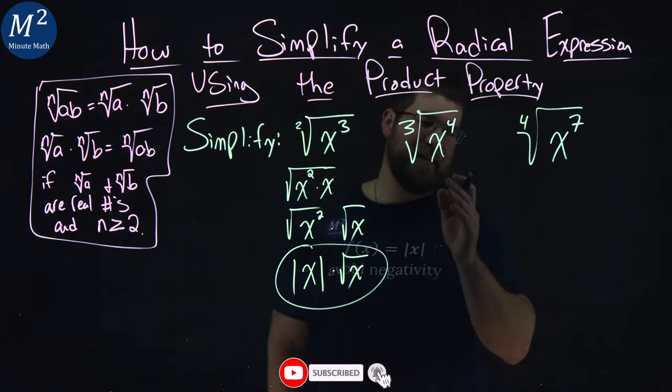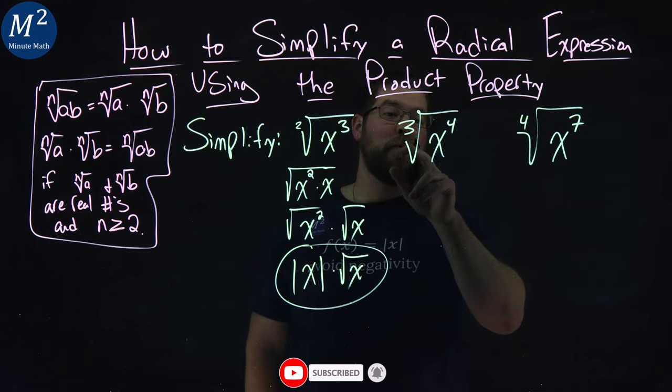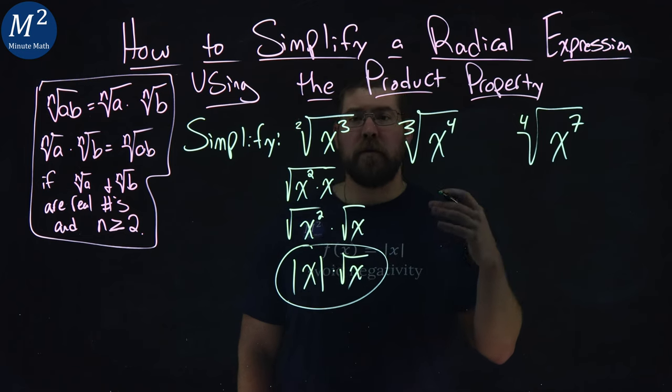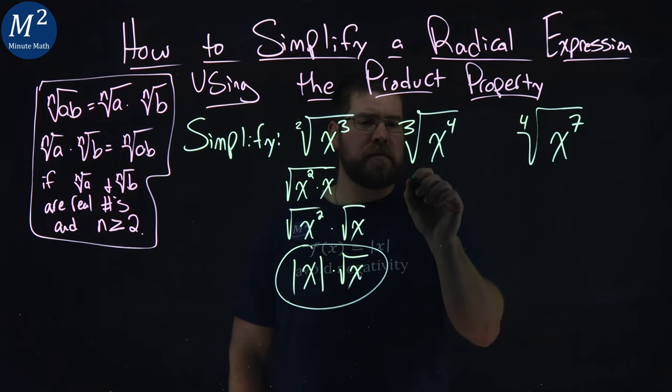The second one here, third root of x to the fourth power, same idea, product property. But here we're looking for perfect cubes. So again, I'm going to separate this up.